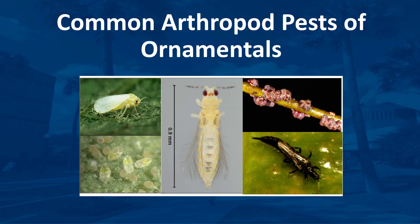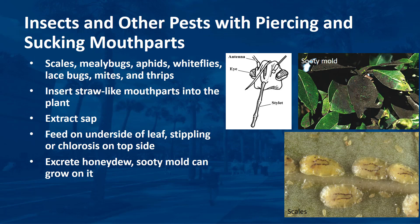I'm Dr. DeBusk, and in this video I'll discuss common species of arthropod pests of landscape ornamental plants. Scales, mealybugs, aphids, whiteflies, lacebugs, mites, and thrips have piercing and sucking mouthparts.